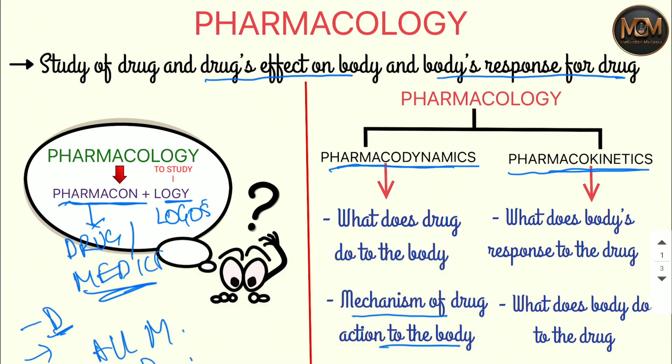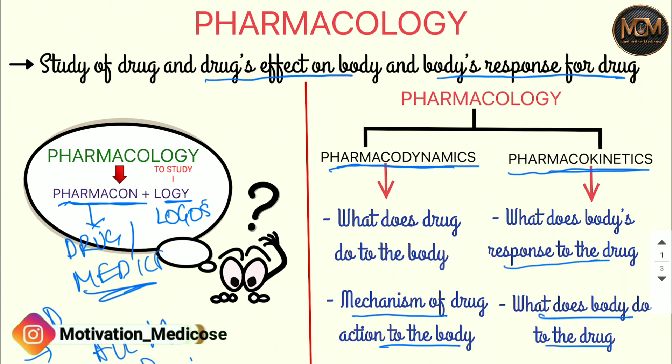On the other hand, pharmacokinetics studies what the body's response is once you take the medicine or drug — in other words, what does the body do to that drug. In pharmacokinetics, we study four processes summarized by the mnemonic ADME.